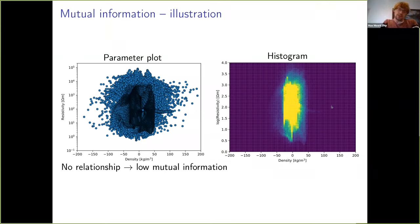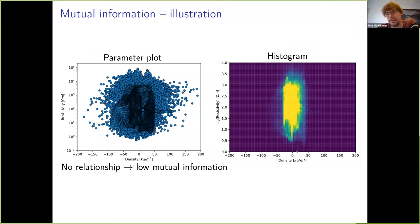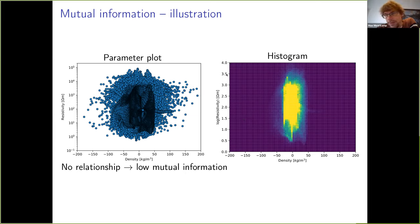If you're interested in the details, there is quite a bit of literature on this. What we can see is that knowing the density anomaly in a certain part of the model is zero doesn't tell us anything about the resistivity. The resistivity associated with that density value can be anything — this is a log scale — between 10 and several thousand ohm meters. And vice versa, if we know something about the resistivity, we know very little about the density. So there's no real relationship.